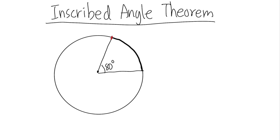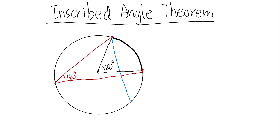The inscribed angle theorem says the following: look at these two points on the arc, and pick another point outside this arc. Connect the dots. Notice that both the central angle and this inscribed angle subtend — meaning they both correspond to — the same arc. This inscribed angle is going to be just half of the central angle, which is 40 degrees. If you pick yet another point elsewhere on the circle and connect those two points, they sustain the same arc, and that angle will again be half the central angle — 40 degrees.